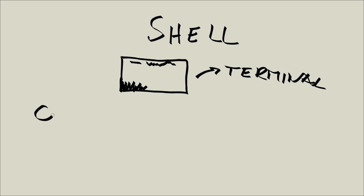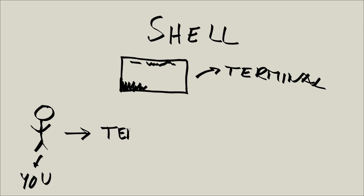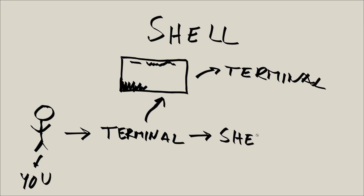So in order for you to truly visualize what is happening: let's say that this is you. You are interacting with the terminal, and the terminal is this black window which allows you to type in commands. The terminal actually allows you access to the shell, and the shell actually allows you to interact with the Linux operating system. So you interact with the terminal — which is a graphical user interface — which allows you to interact with the shell, and then the shell interacts with the Linux operating system.